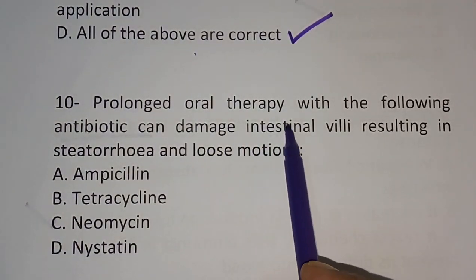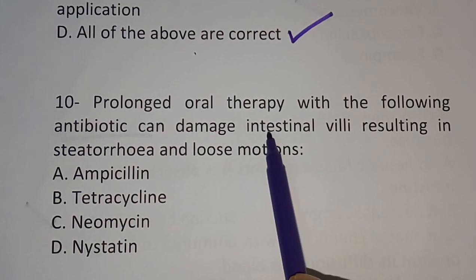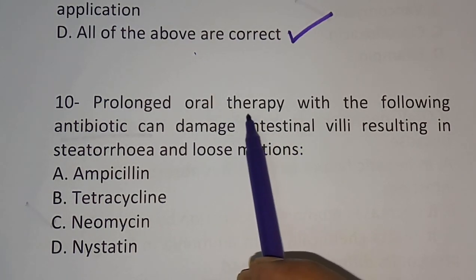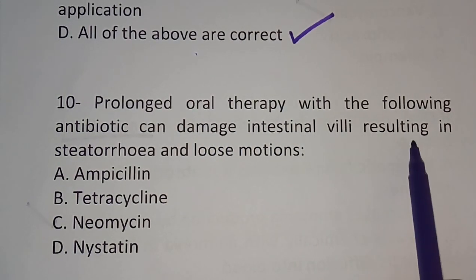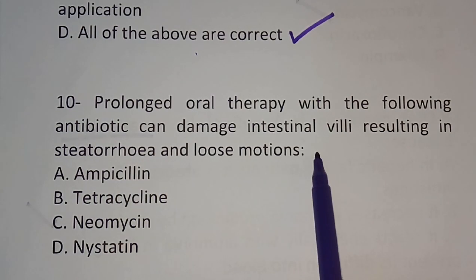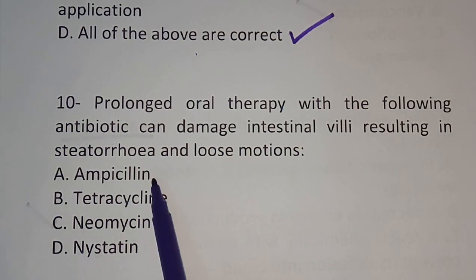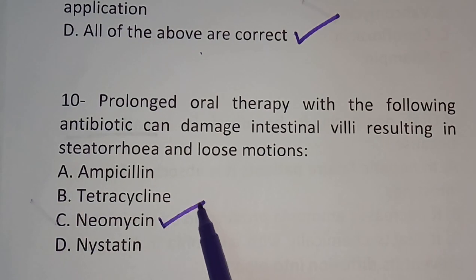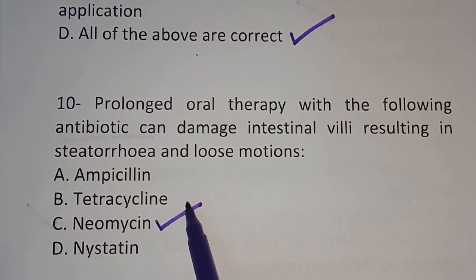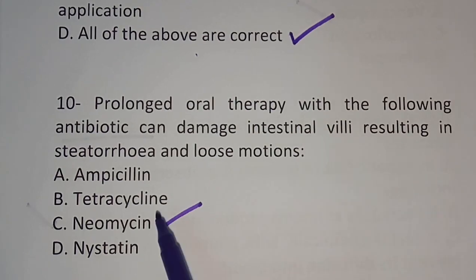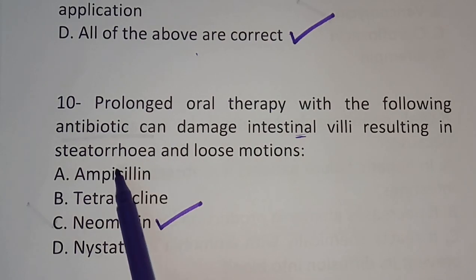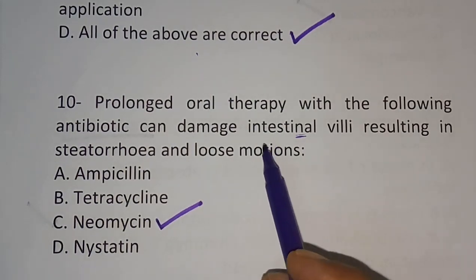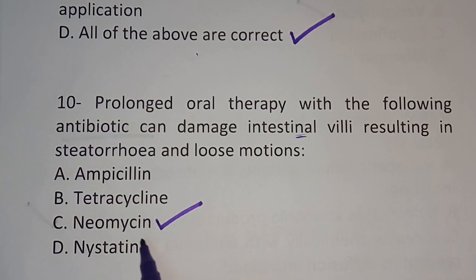Question 10: Prolonged oral therapy with which antibiotic can damage intestinal villae? The correct answer is Neomycin. Prolonged oral therapy of Neomycin can damage intestinal villae, resulting in steatorrhea and loose motions.